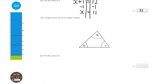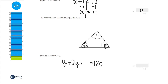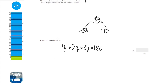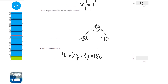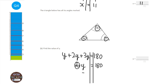Question B: all angles in a triangle add up to 180. So if we add y, 2y, and 3y together, it equals 180 degrees. 1y plus 2y plus 3y gives us 6y in total. Then divide both sides by 6: y equals 180 divided by 6. Since 18 divided by 6 is 3, y equals 30.